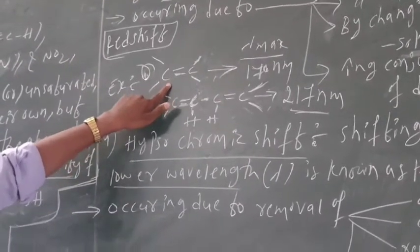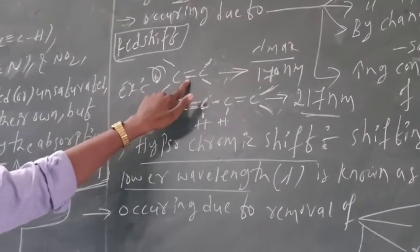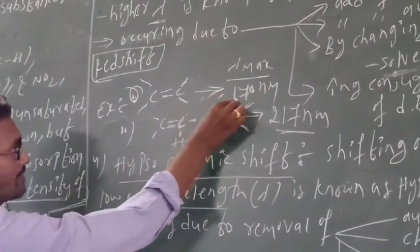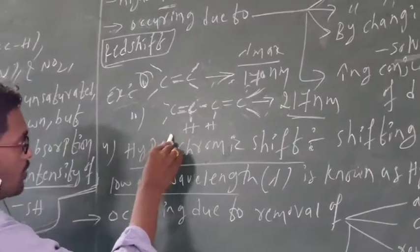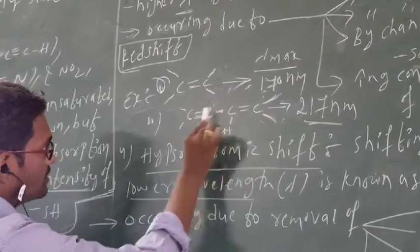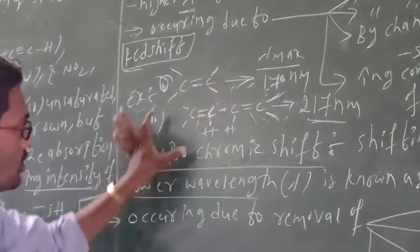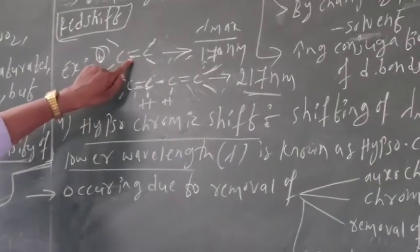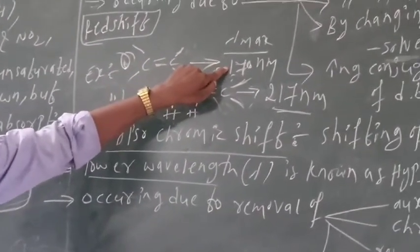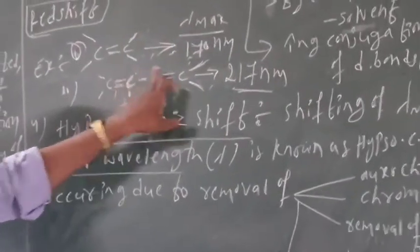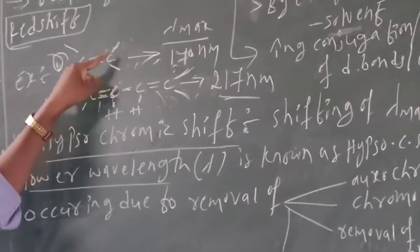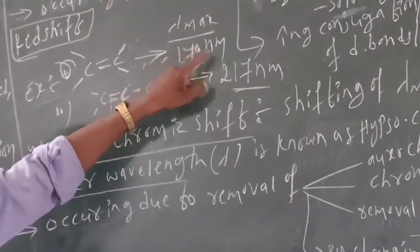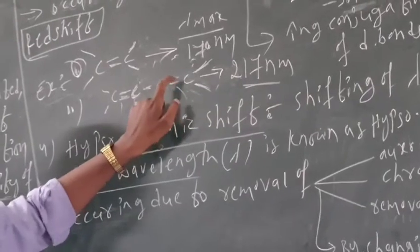For example: ethylene (C2H4) has one double bond and its lambda max is 170 nanometers. The second compound, 1,3-butadiene, has four carbons and two conjugated double bonds. Its lambda max is 270 nanometers. Compared to ethylene, the lambda max of 1,3-butadiene is higher because of the increased number of double bonds — increasing conjugation increases lambda max. This is an example of bathochromic shift.